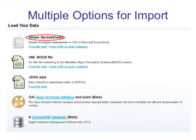Currently there are five import options. We've been talking a lot about the spreadsheets option and we'll use that today. You can also use CSV — for larger files with more than hundreds of objects, CSV is recommended. Excel works as well. The XML MODS file is also an option. We recently added a JSON data option, which was discussed in a blog post in April — someone used Twitter data and uploaded it into ViewShare. There's also OAI and ContentDM options.